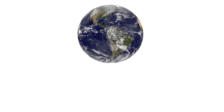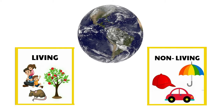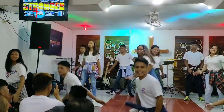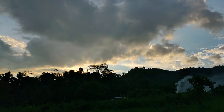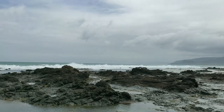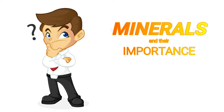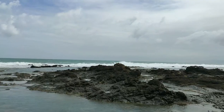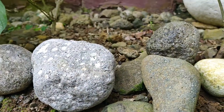We know that the earth consists of living and non-living things. There are trees, animals, people, landforms like mountains and hills, and water forms like rivers and sea. But do we ever notice the existence of minerals and their importance? In this video, we're going to be talking about the two kinds of minerals that we can find in rocks.